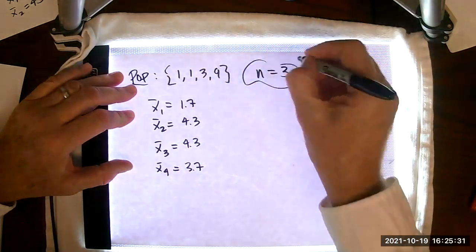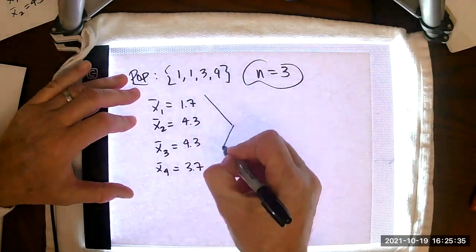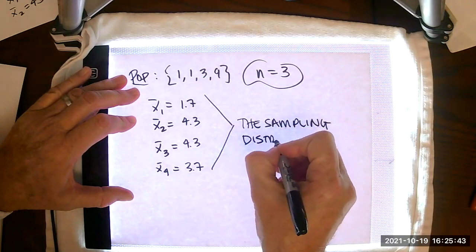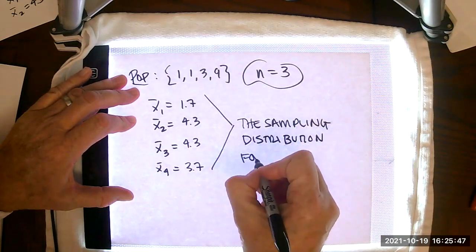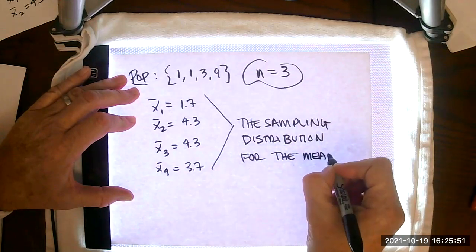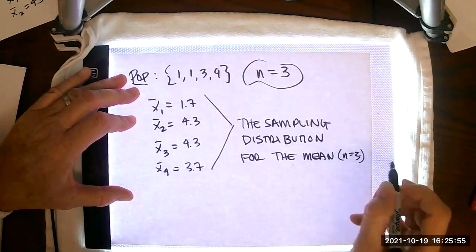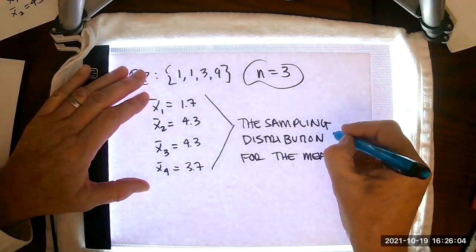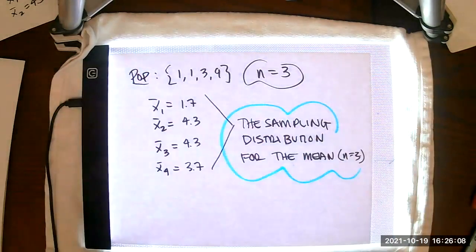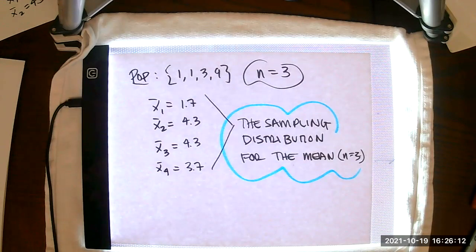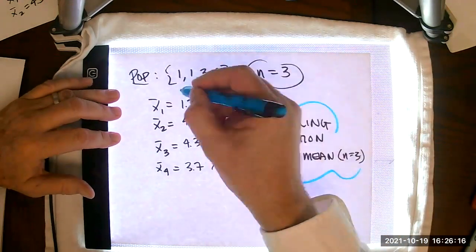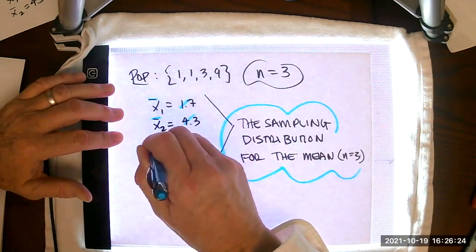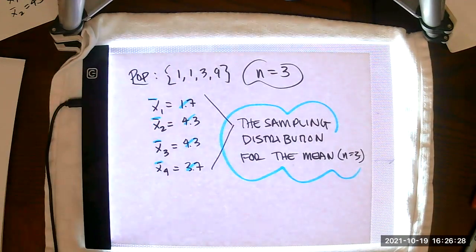So let me summarize on a piece of clean paper. We have our population: 1, 1, 3, 9. And we sample with size n equals three. X bar one equals 1.7, x bar two equals 4.3, x bar three equals 4.3, and x bar four equals 3.7. So for my samples of size n equals 3, this here is what we call the sampling distribution for the mean. And we did that when n was equal to 3. This sampling distribution for the mean is a very, very important concept.